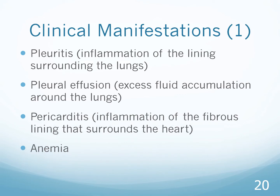These deformities can be found in your textbook or searched online. Other clinical manifestations include pleuritis — inflammation of the lining surrounding the lungs — a pleural effusion (excess fluid accumulation around the lungs), and pericarditis — inflammation of the fibrous lining that surrounds the heart. Lab studies may also indicate anemia, because connective tissue surrounds the organs of the body as well.